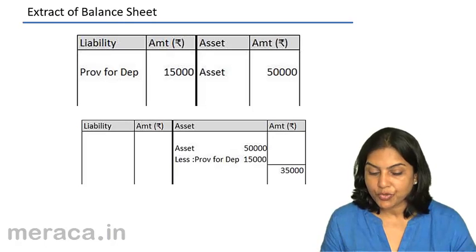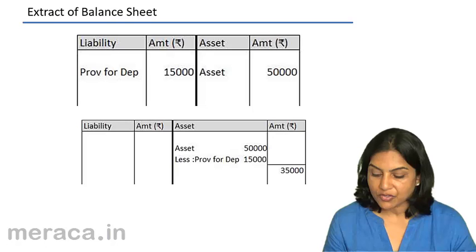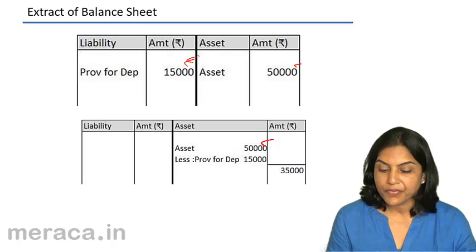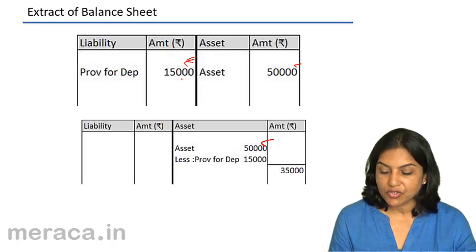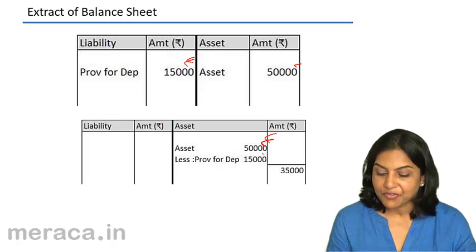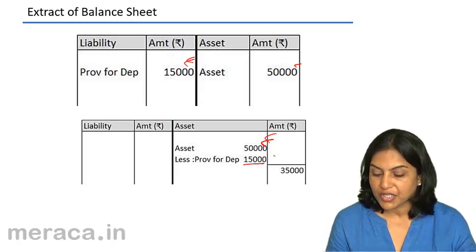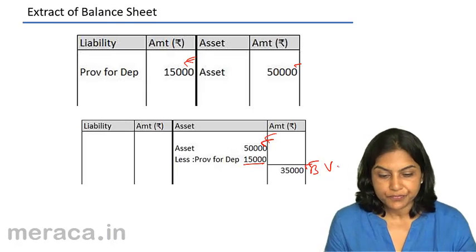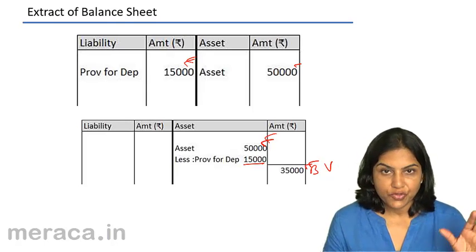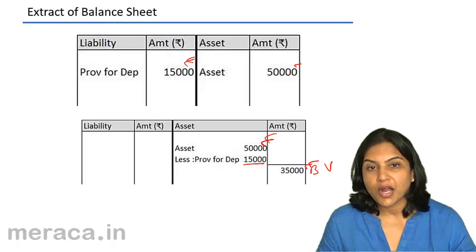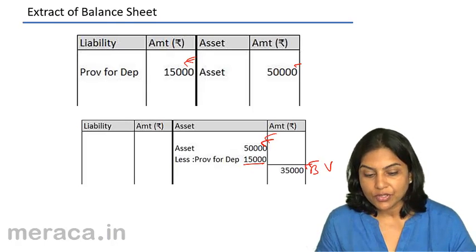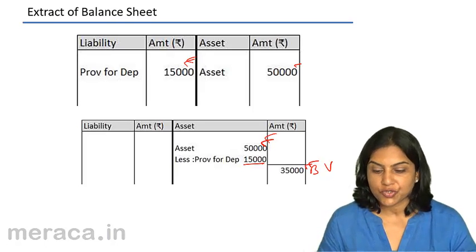An extract of the balance sheet would show the asset with a debit balance of 50,000 and provision for depreciation with a credit balance — for example, 15,000. In the balance sheet, it is displayed as asset 50,000 less provision for depreciation 15,000, giving a balance of 35,000 as the book value or written down value. Therefore, these are the two methods of accounting for depreciation: either depreciation account debit to asset account, or depreciation account debit to provision for depreciation account.